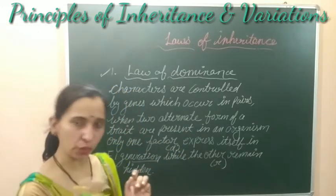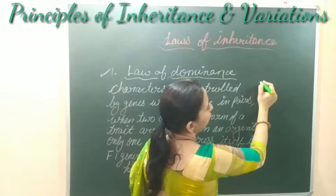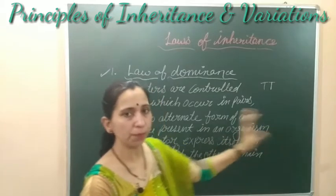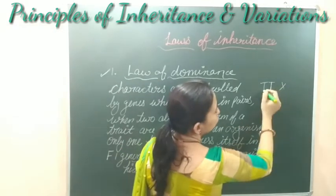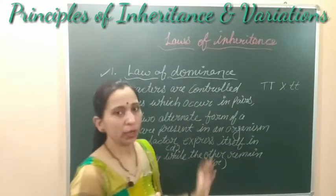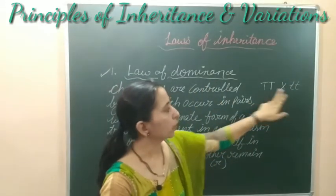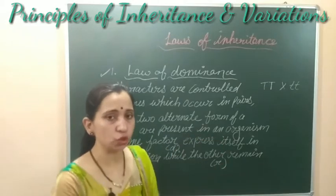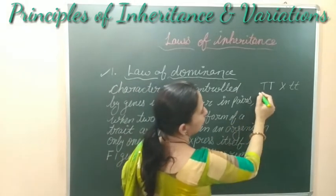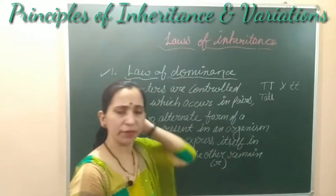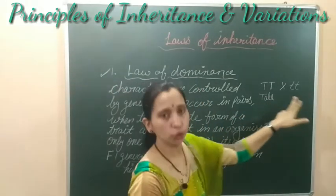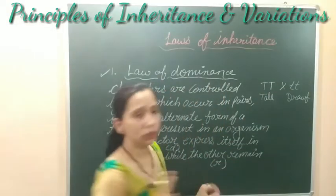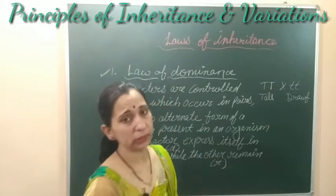We can explain this with the monohybrid cross example. We took pure tall plants and crossed them with pure dwarf plants. The tall plant is homozygous dominant and the dwarf plant is homozygous recessive. When these two parent plants are crossed, the tall plant shows its effect while the dwarf condition is the homozygous recessive.